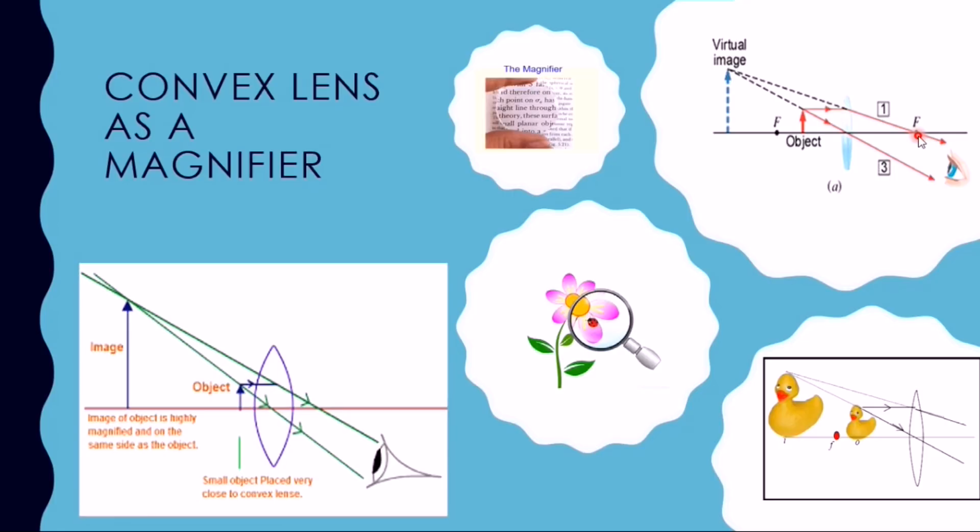The second line that passes through the optical center of the lens remains undeviated. We reproduce these lines in the backward direction and get an enlarged and virtual image of the object.